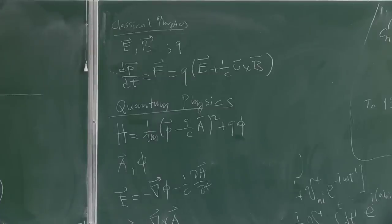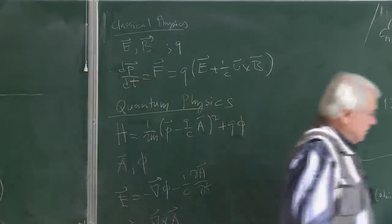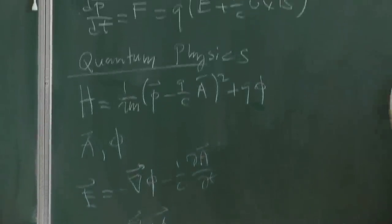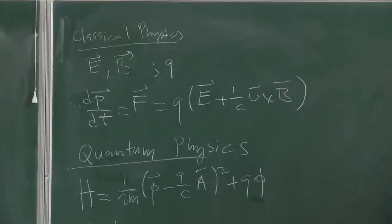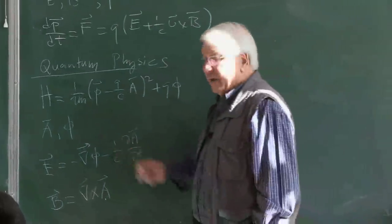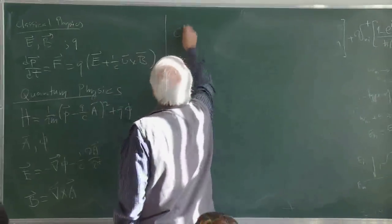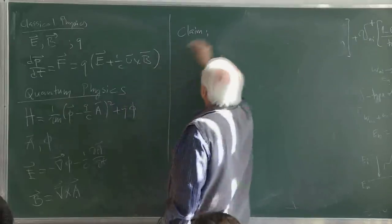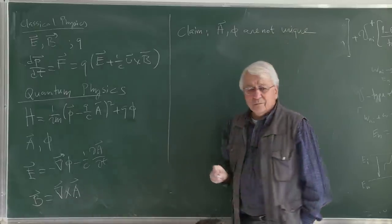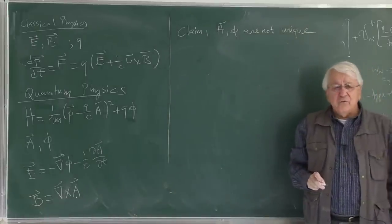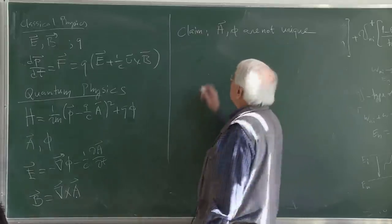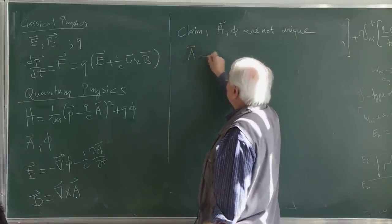There are some mismatches. First, there are three E components, three B components - six fields altogether. Here there are four potentials. Even the numbers don't match - six entities there and four here. We know how to relate these two sets. E can be obtained from potentials: minus gradient of phi minus 1/c dA/dt. Both A and phi enter into constructing the electric field. B is the curl of A. At least you know how to relate these two sets.